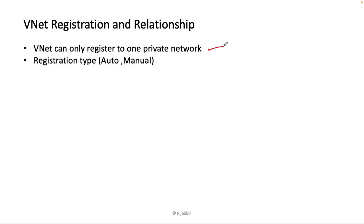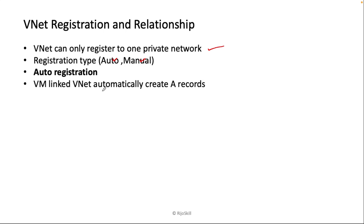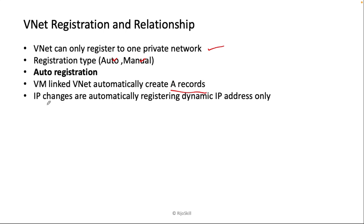Now let's go over VNet registration and the relationship types. A VNet can only be registered in one private DNS zone for registration. There are two types: automatic and manual. With auto registration, once you link your virtual network and enable auto registration, the VM records are automatically created — for example, 'vm1.rejo.indian' and 'vm2.rejo.com' are added automatically without any manual steps.